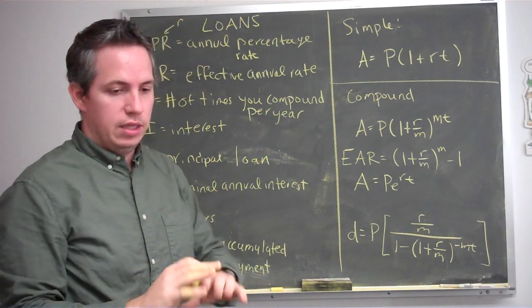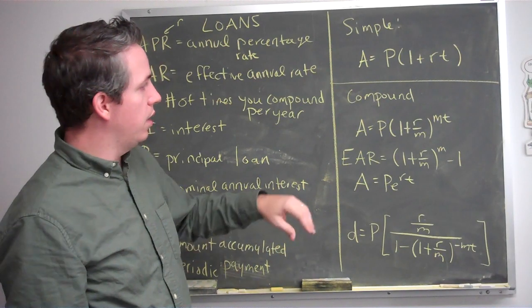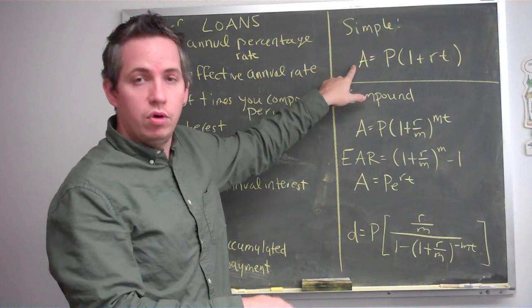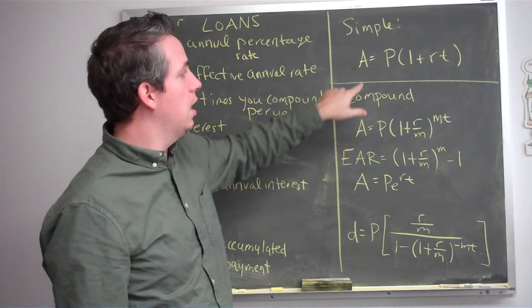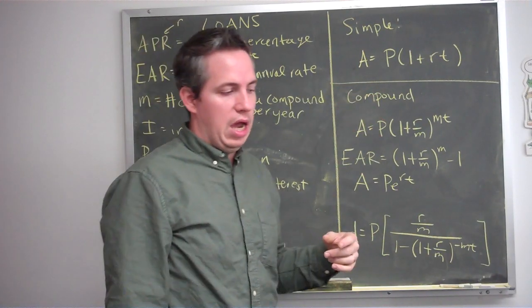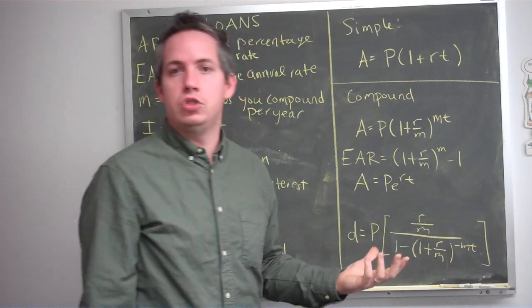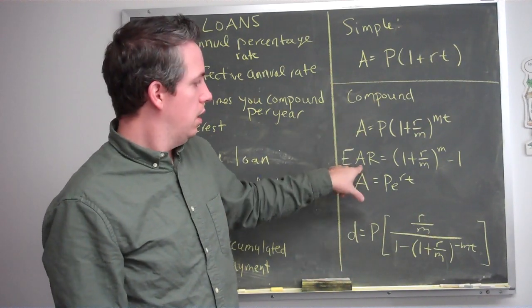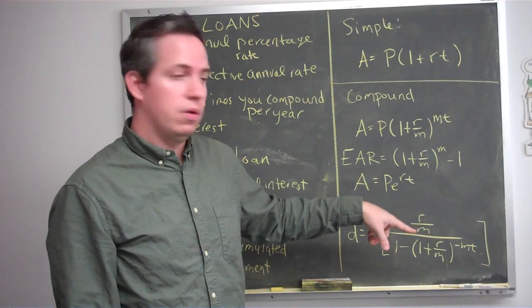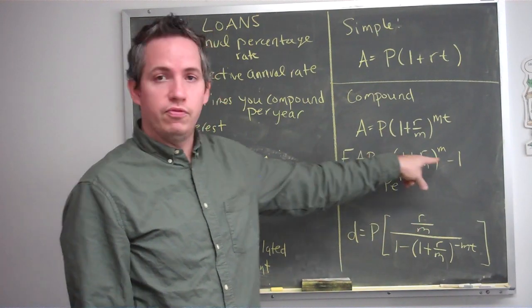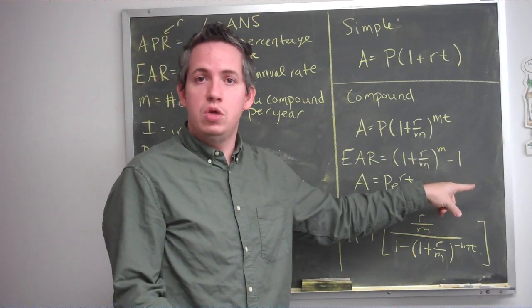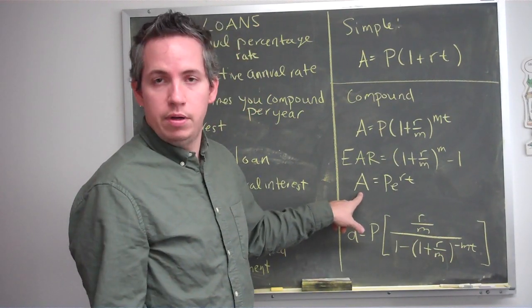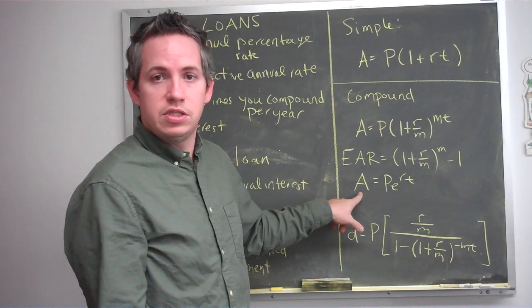You'd expect the formulas to be the same as last time. Simple interest: same formula, just in the loan world. The amount accumulated is not how much you've made — it's how much you now owe. Compound interest: same thing. EAR is the same as APY, so you get the exact same formula — it's the actual amount of interest accumulated on your loan after a year. Continuously compounded: same exact deal.